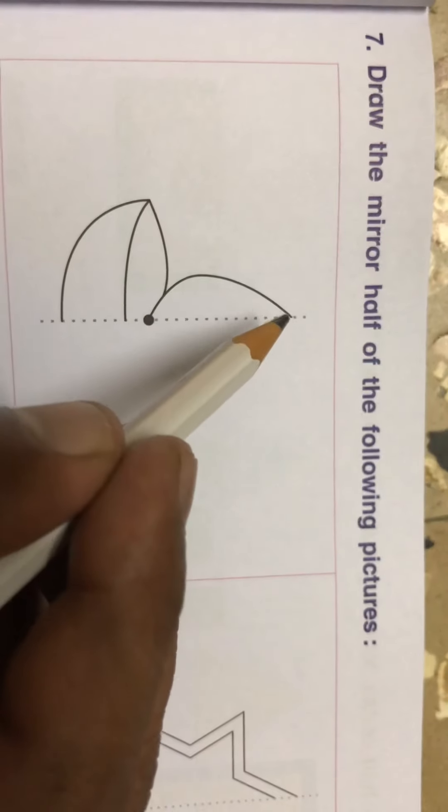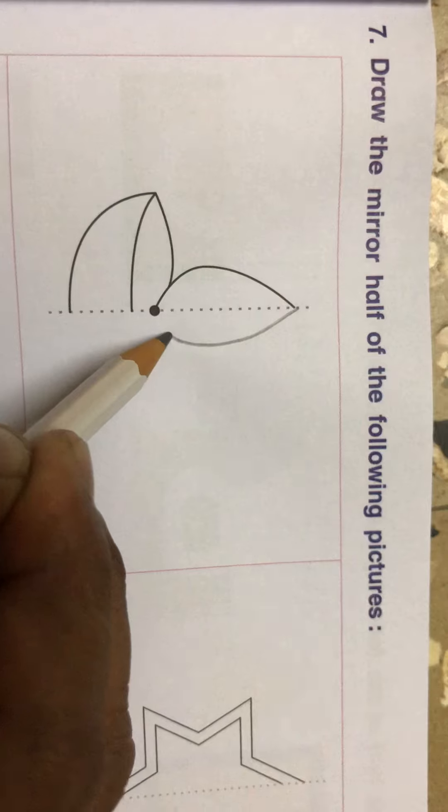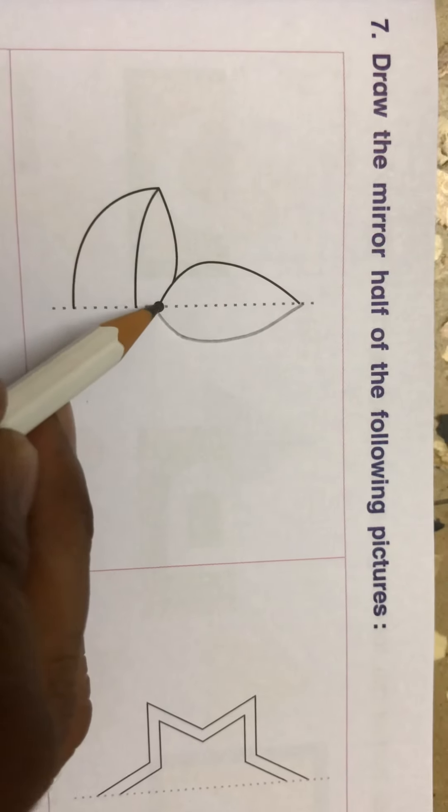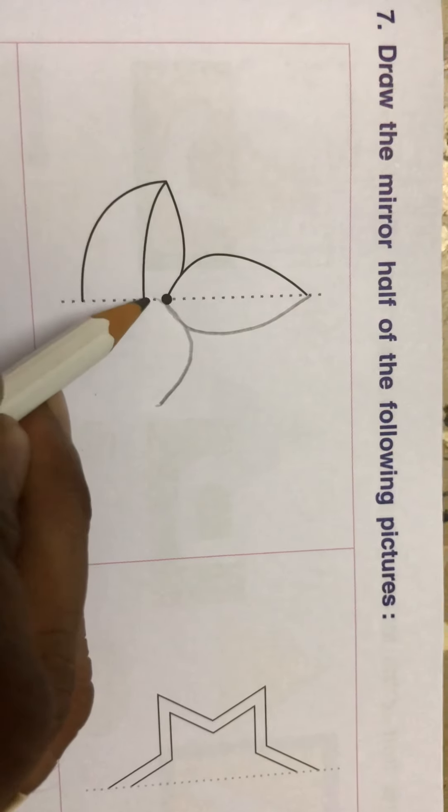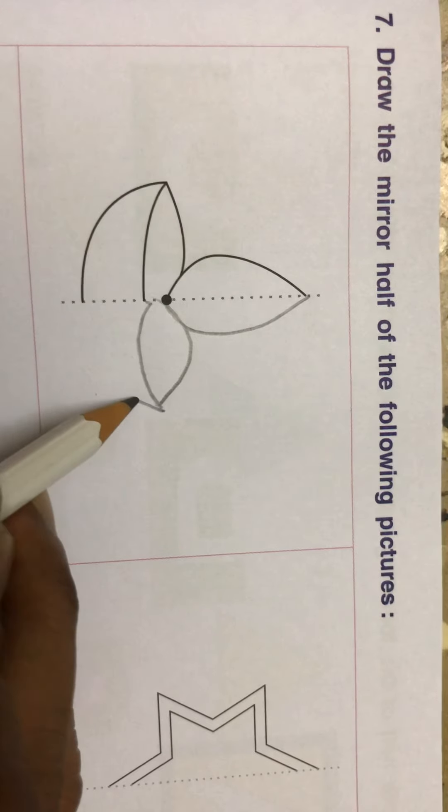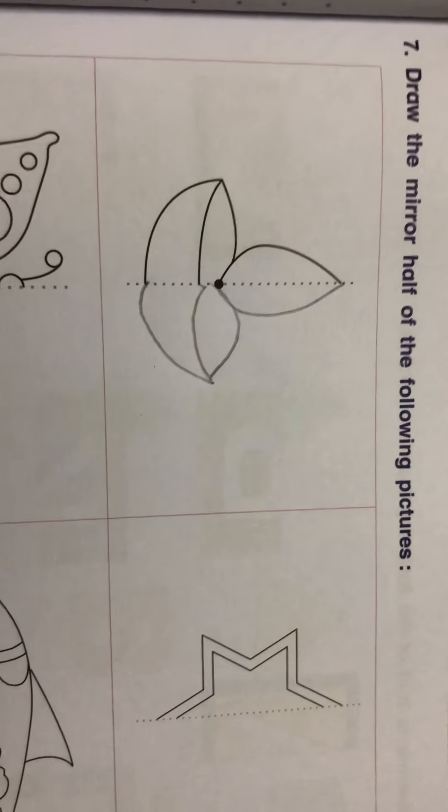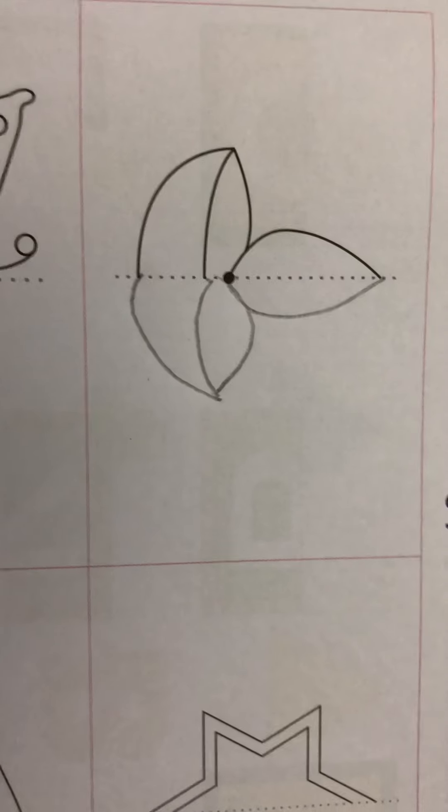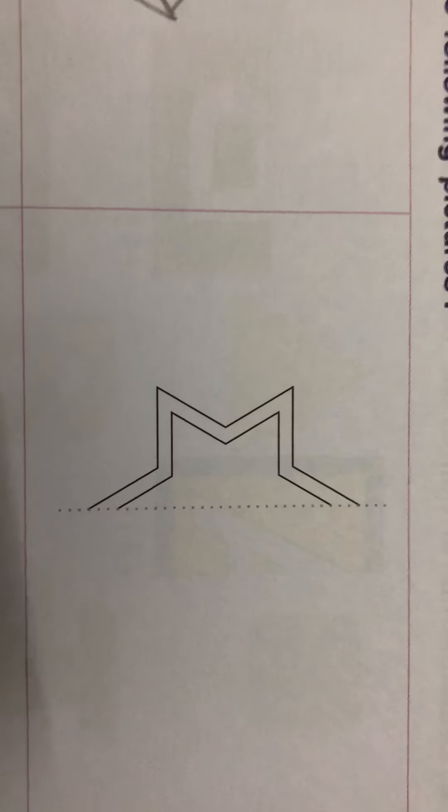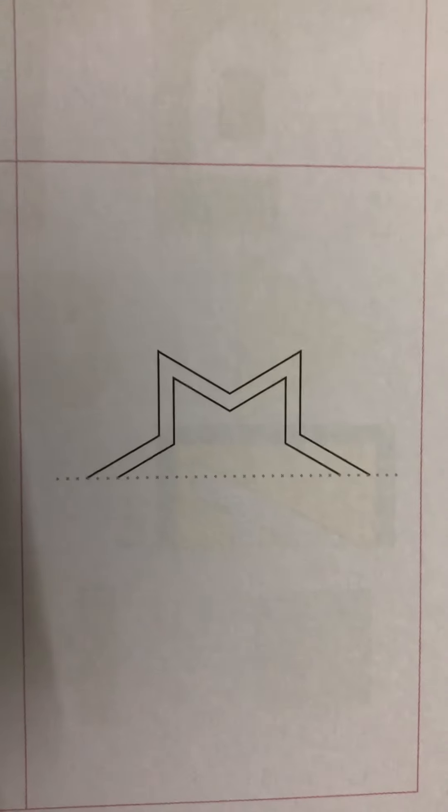So you will do like this. Then join it. So you have to draw the half of the given image to make it complete. This is called mirror image. See this one, you will do it yourself. Use scale for this.